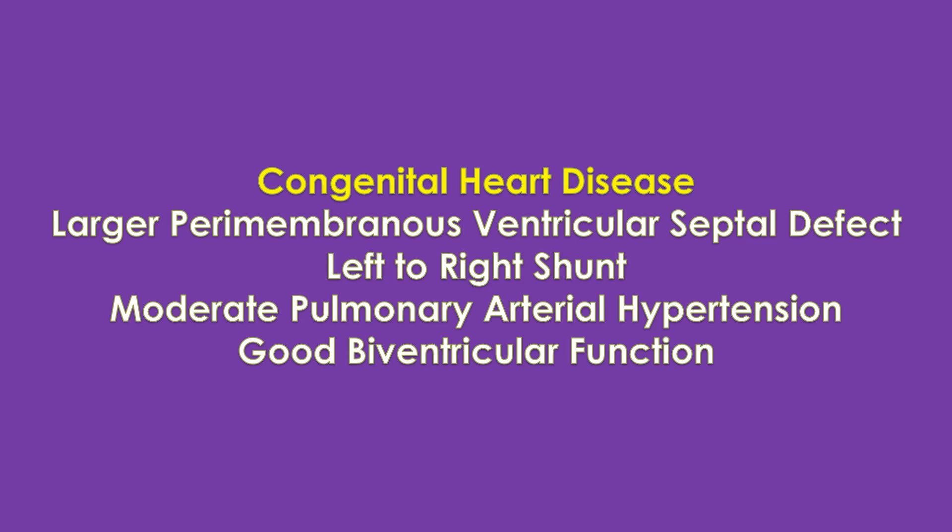For example, in a person with a defect in the wall between the lower chambers, it may read as: Congenital heart disease. Large perimembranous ventricular septal defect. Left to right shunt. Moderate pulmonary arterial hypertension. Good biventricular function. This would mean that there is a large defect in the upper part of the wall between the two lower chambers, and blood is leaking from the left ventricle to the right ventricle across the defect. The pressure in the blood vessels of the lungs has gone up due to the increased flow, but the pumping function of both right and left ventricles are normal.